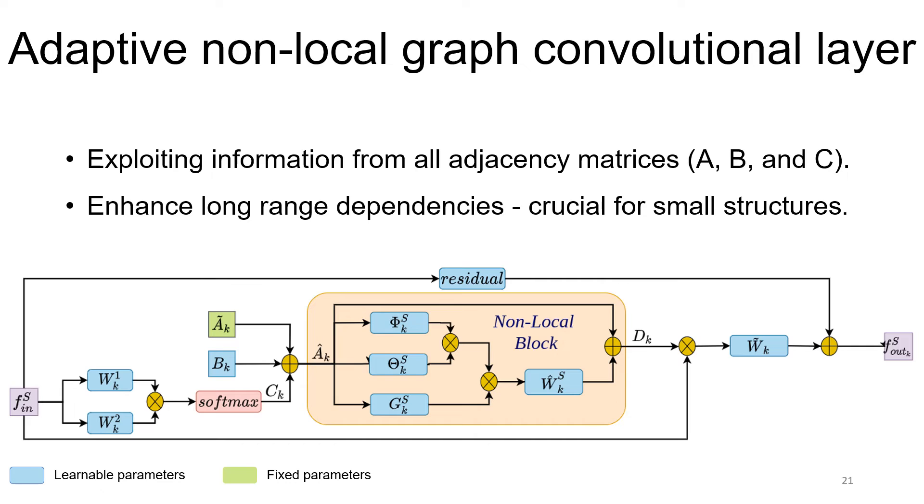Finally, we construct our adaptive non-local graph convolution layer that utilizes the information from all adjacency matrices altogether and enhances their non-trivial long-range dependencies, which are crucial for style learning.